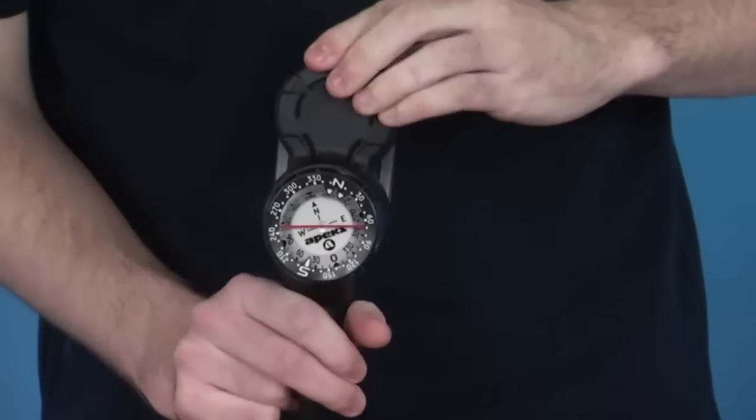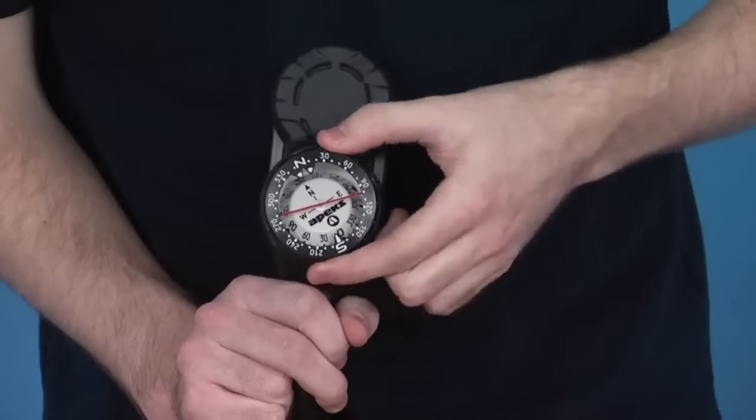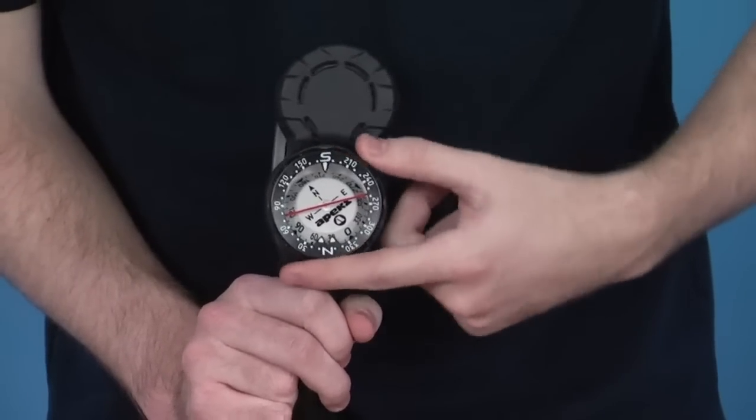Turn around to look at the compass then. Again, very large digits, so it's very easy to read. That's an adjustable bezel, so even if you are wearing gloves, it's easy to adjust.